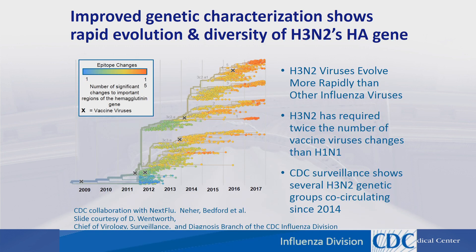David Wentworth from the Virology Surveillance and Diagnostic Branch of the CDC provided me this slide. It shows their work analyzing the drift occurring in H3N2s. Their focus was on the vaccine, showing that H3N2s evolved more rapidly than other influenza viruses, causing more vaccine changes. They had started to see, in 2014, the emergence of various clades of H3N2.